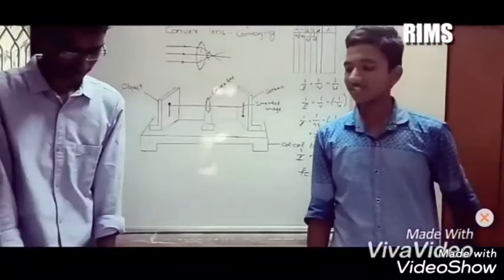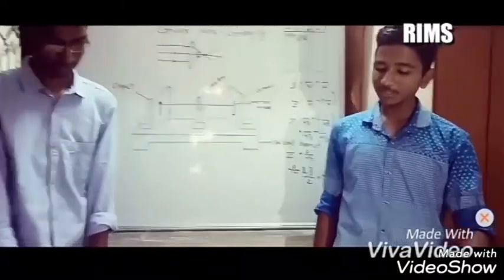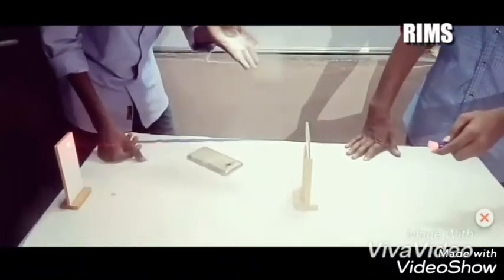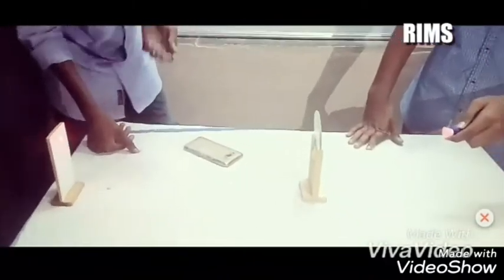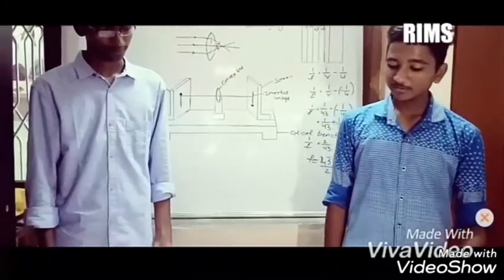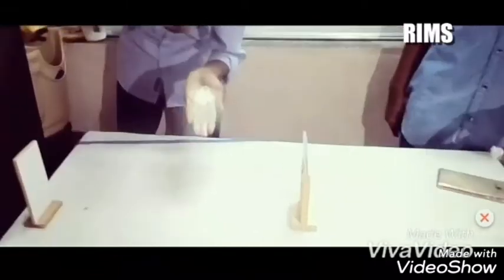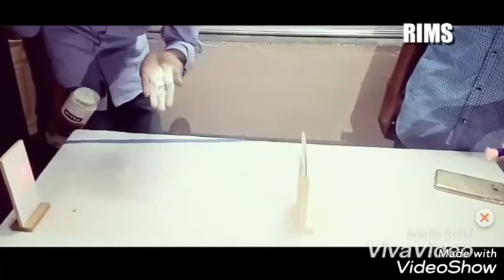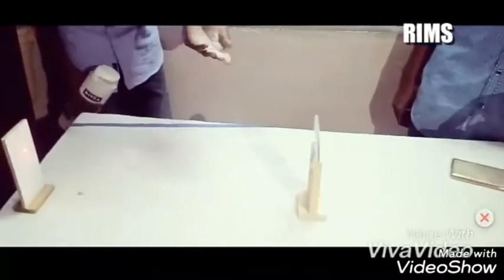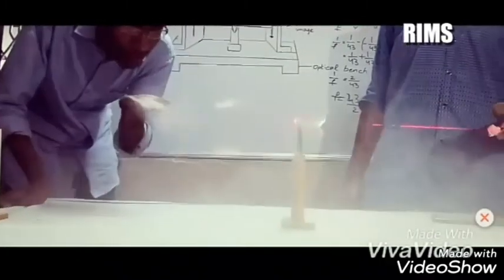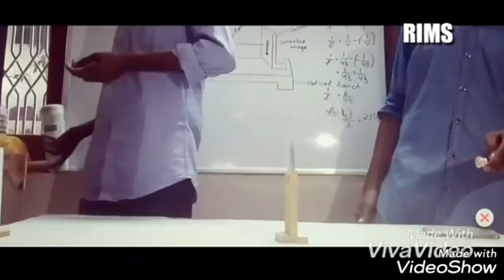Next, the lens is converging. Now we practically prove that by using talcum powder. You see here the rays are converging to the center. Now we practically prove with a laser and talcum powder. Now you can see that the rays are bending and they meet at a point. All these rays meet at a point. Thank you.